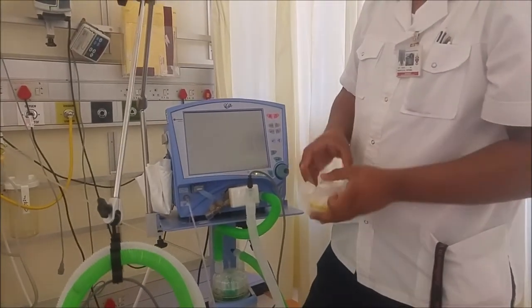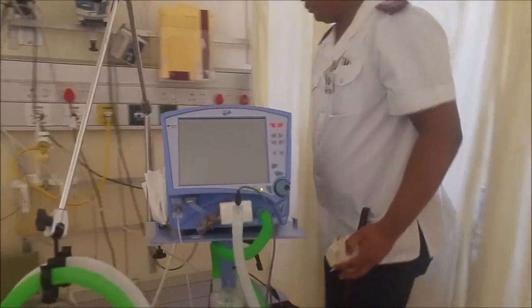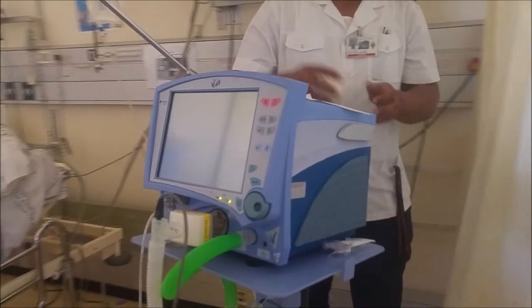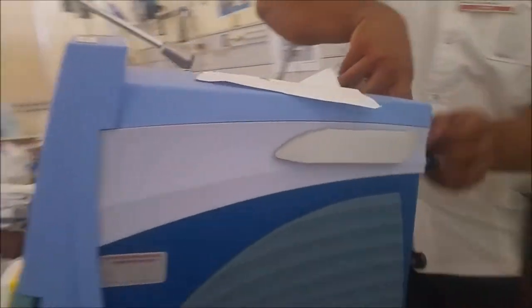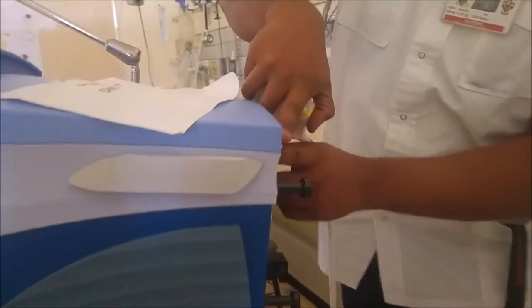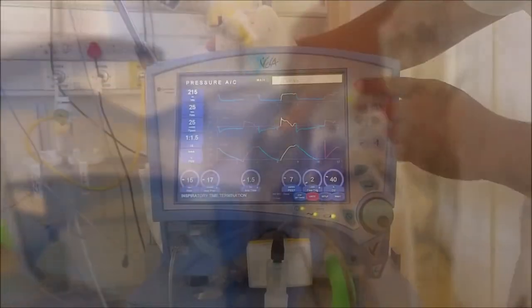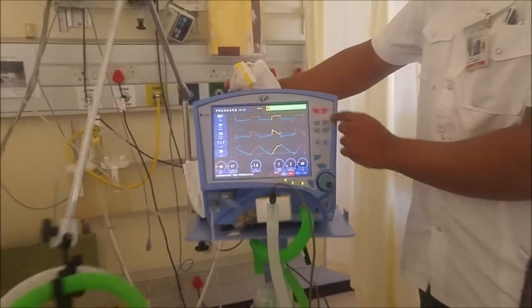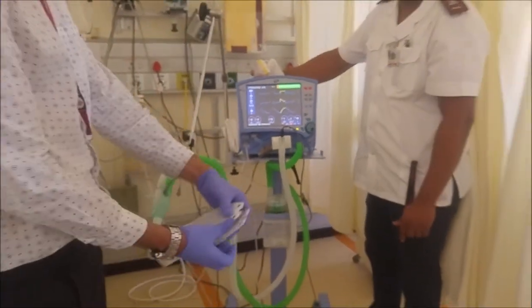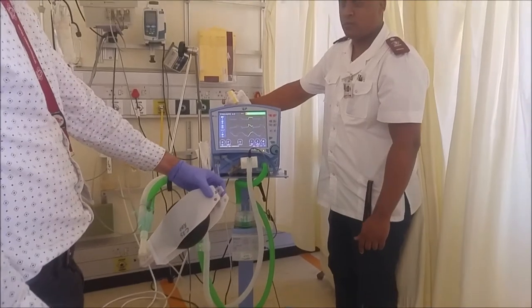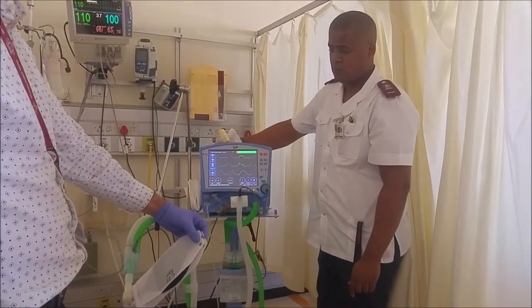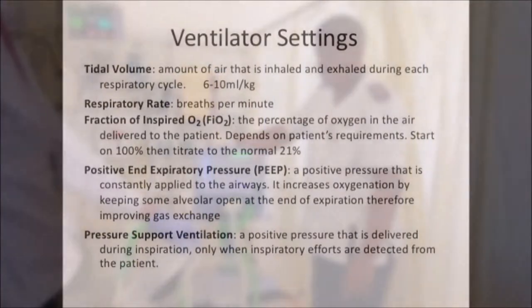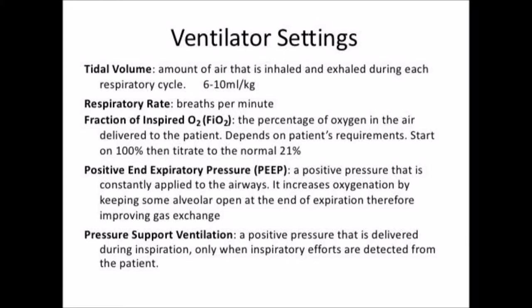Once a mode is selected, other ventilator settings include tidal volume, which is the amount of air that is inhaled and exhaled during each respiratory cycle; respiratory rate, which is the number of breaths per minute the ventilator will deliver to the patient; and fraction of inspired oxygen, or FiO2, which is the percentage of oxygen in the air delivered to the patient.